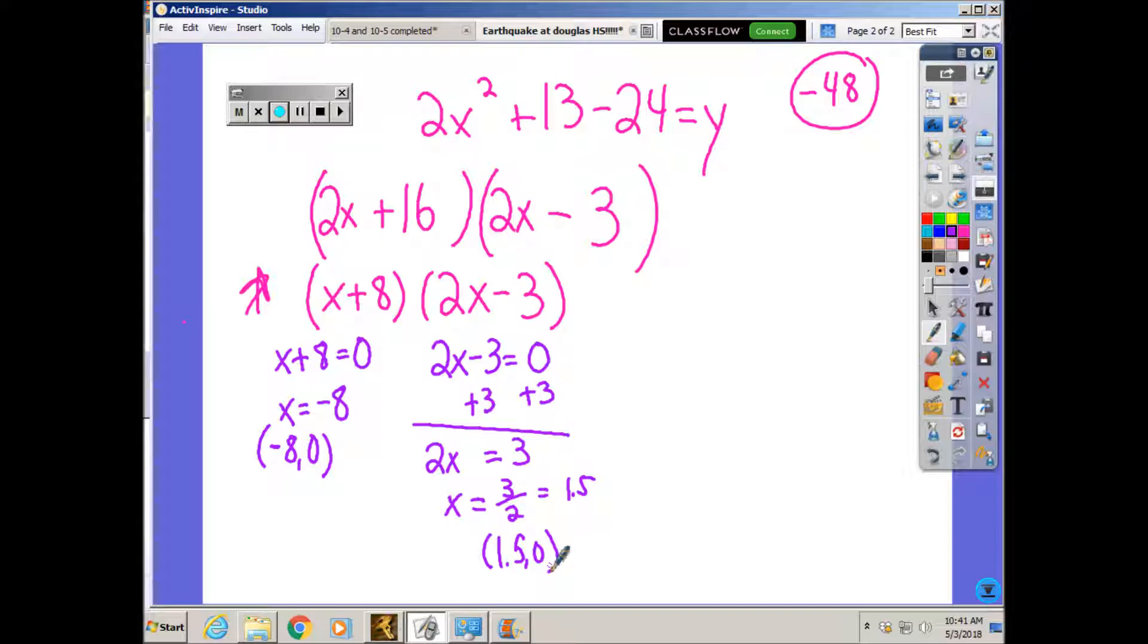Then for the y intercepts, the y intercept is the number by itself. It's negative 24. So the y intercept is 0, negative 24. Everybody should have been able to do that. Everybody should have been able to give the y intercept on every question and get a 20%.